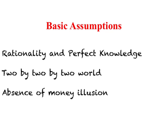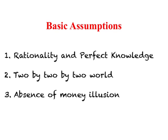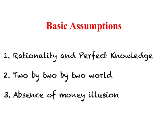We are working our way through basic assumptions needed to understand international trade. So far we have made three basic assumptions: rationality and perfect knowledge — that is, economic agents are rational and have perfect knowledge; the two-by-two-by-two world of two countries, two goods, and two factors of production; and third, the assumption we are currently working through — absence of money illusion.